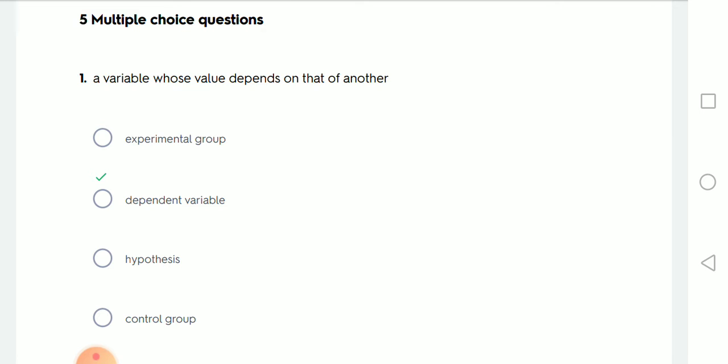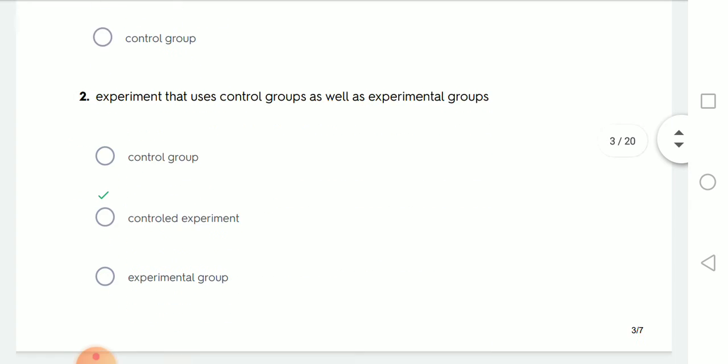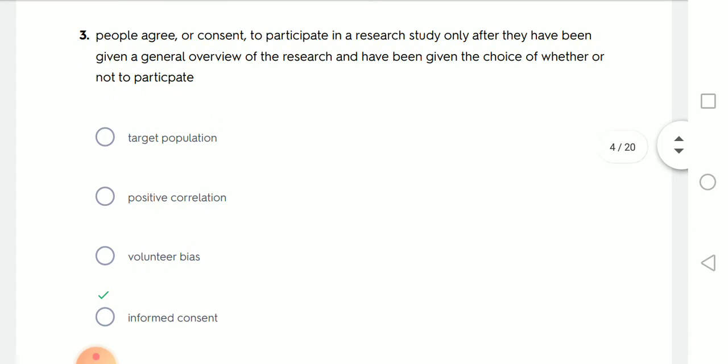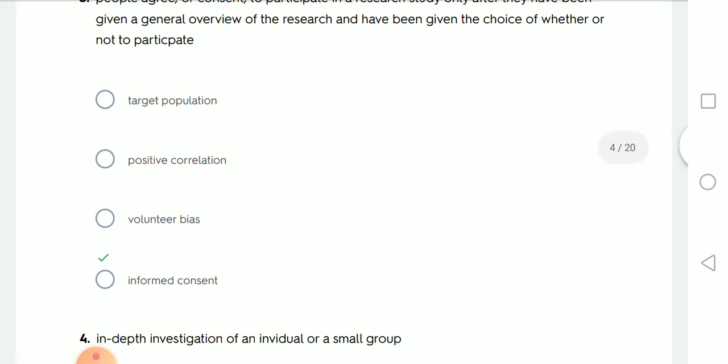Experiment uses control groups as well as experimental groups. This experiment is called what? Controlled experiment. People agree or consent to participate in a research study only after they have been given a general overview of the research and have been given the choice of whether or not to participate, they are called informed consent.